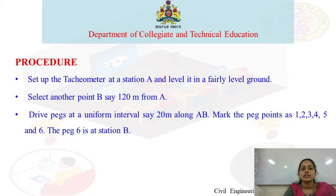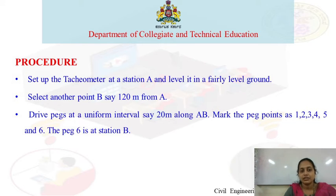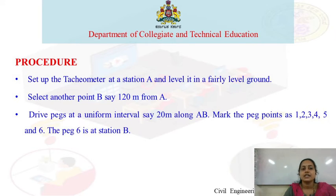Procedure: Set up the tachymeter at station A and level it on a fairly flat ground. The instrument is set up at station A. Select another point B, say 120 meters from A.